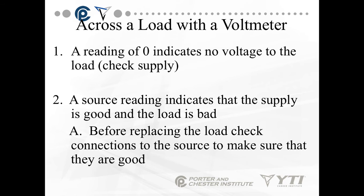If you check across a load with a voltmeter, a reading of zero indicates no voltage to the load, so you have to find out from the supply side why you're not getting voltage. A source reading indicates the supply is good and the load is bad.